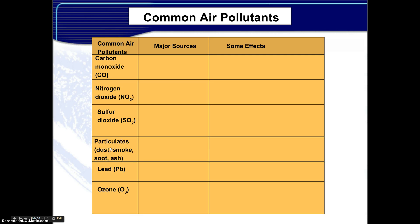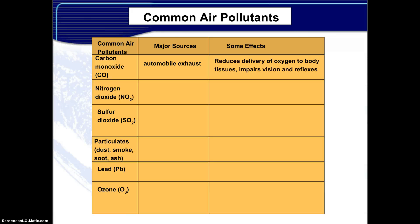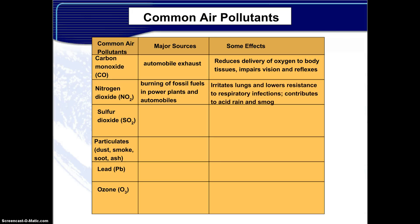Listed on the left of this table are the common air pollutants of the Clean Air Act of 1970. The major sources for carbon monoxide include automobile exhaust. Some effects include reduced delivery of oxygen to body tissues, and impaired vision and reflexes. For nitrogen dioxide, the major source is burning fossil fuels in power plants and automobiles. Some effects include irritated lungs, lowered resistance to respiratory infections, and contributions to acid rain and smog.